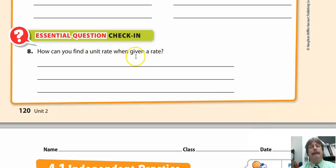On your essential question, how can you find a unit rate when given a rate? If you go back to the top, when you're looking at the first introduction, they had 16 miles per two hours. That takes you to the end of lesson 4.1. Good luck.